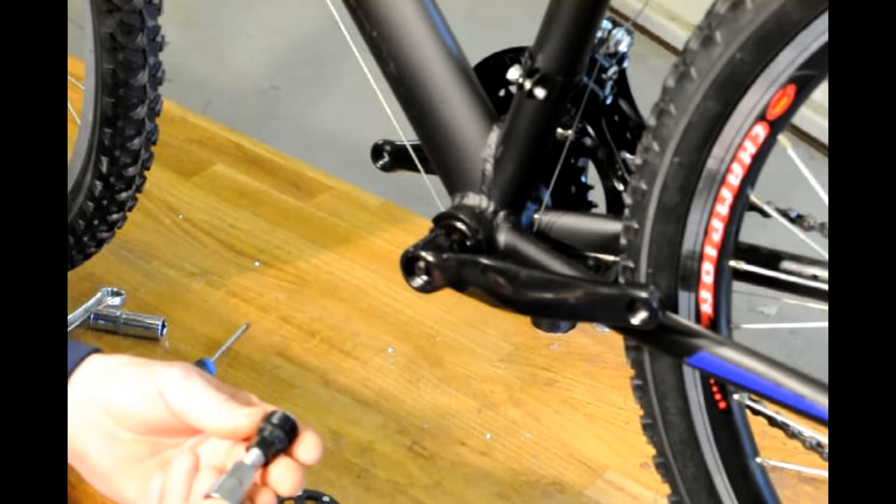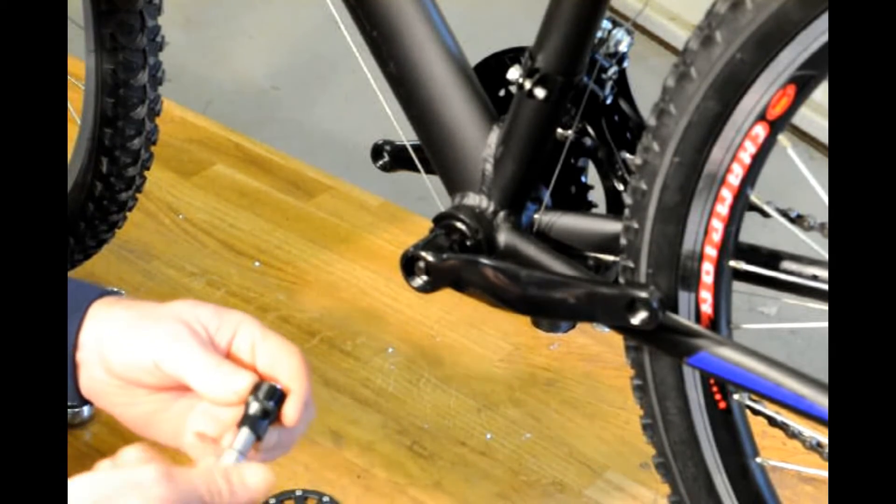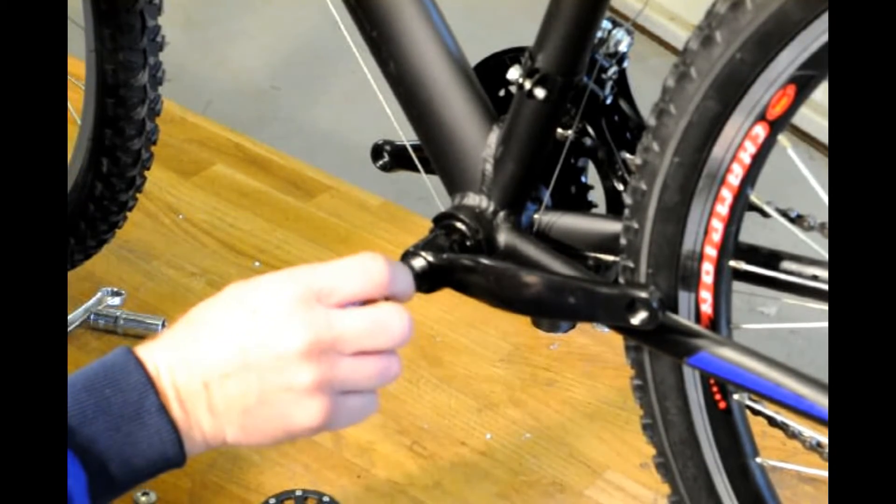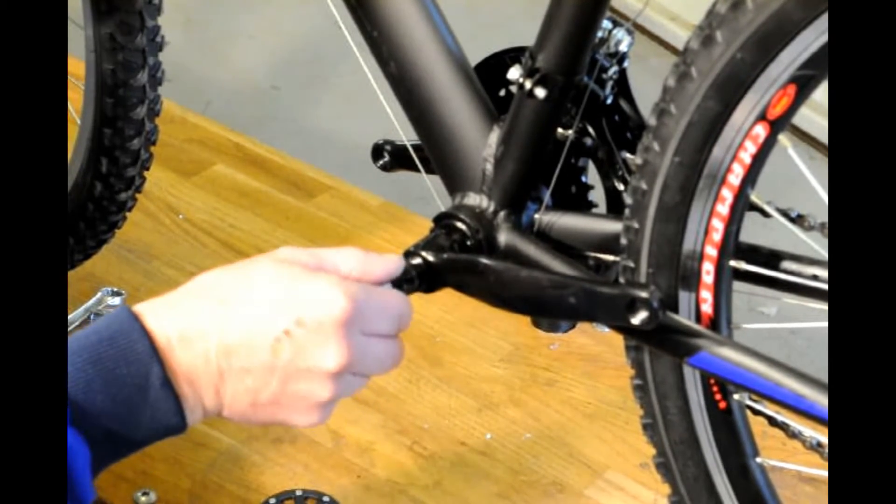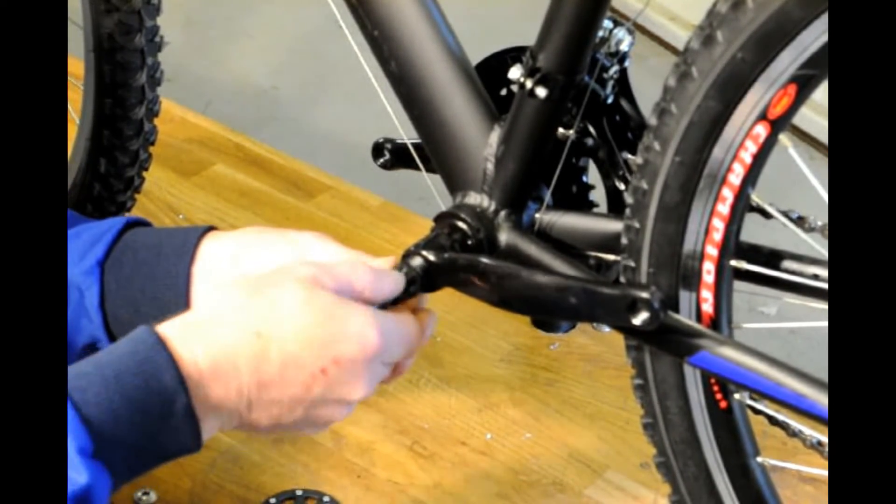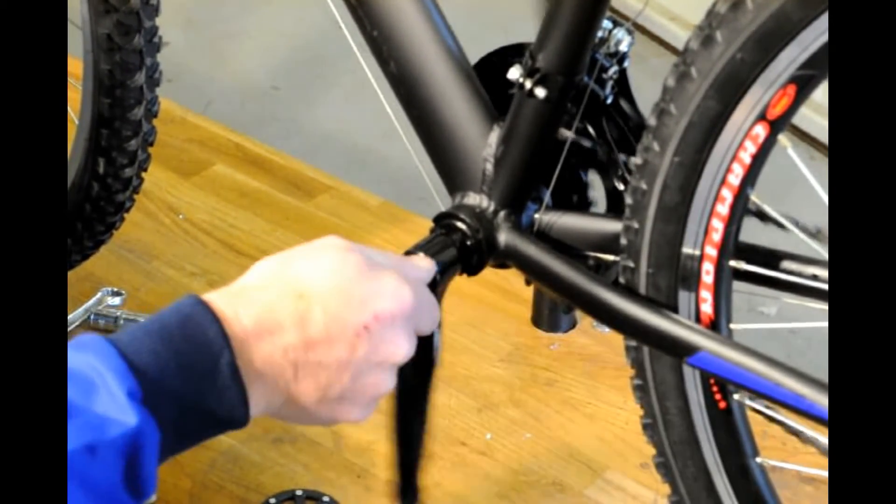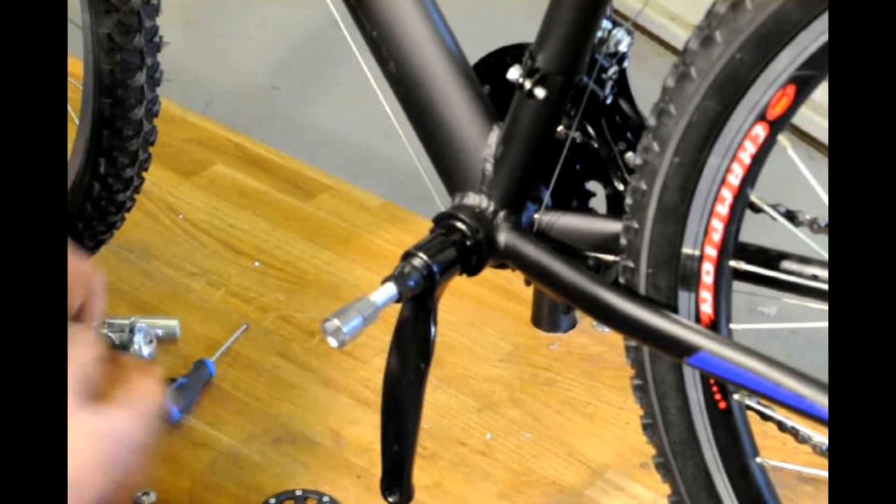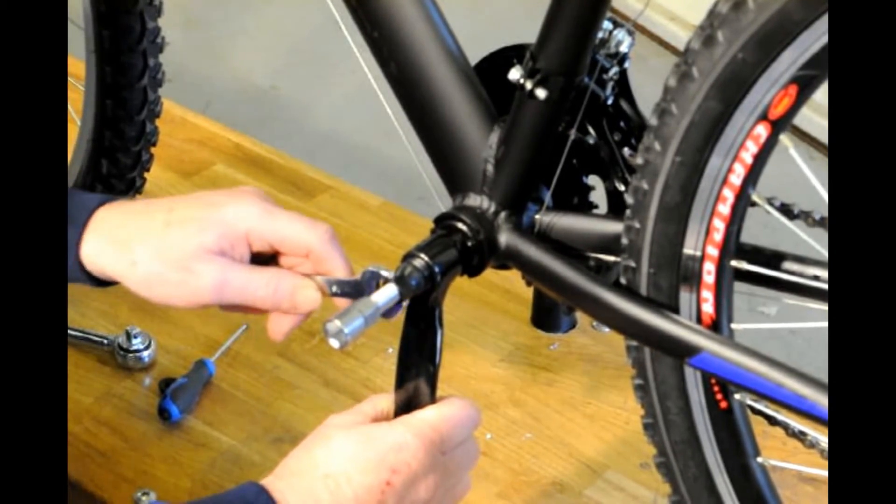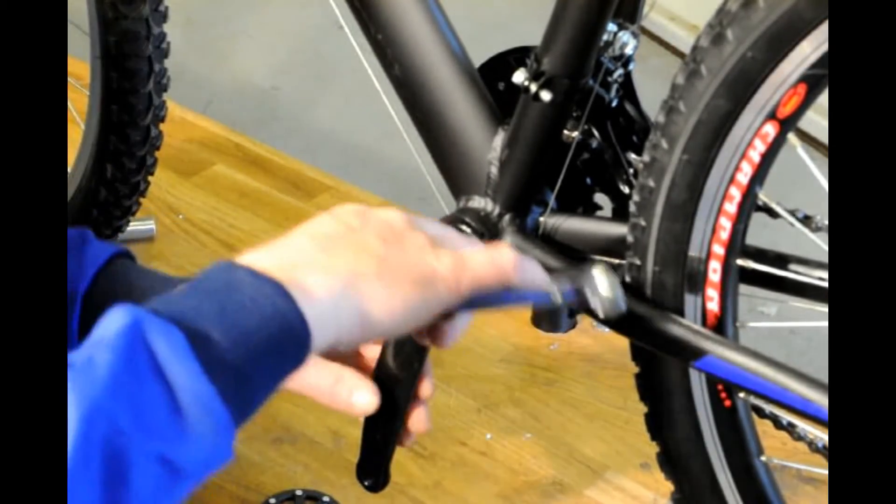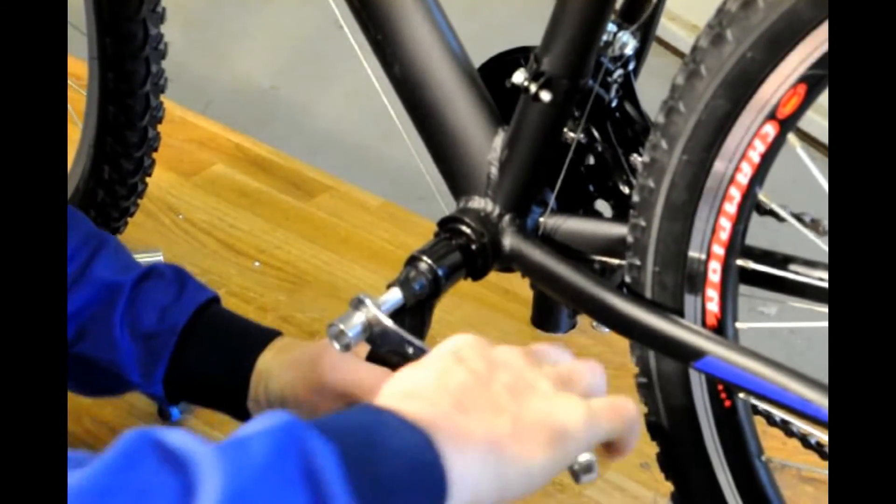You then need to come back to the special tool which I spoke about earlier to actually pull this crank off. So you screw the black piece in. This needs to go all the way home. Make sure it's fairly tight. You then need to screw in the silver bit which is the pull apart.